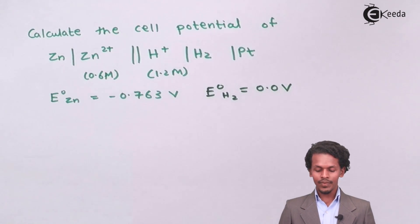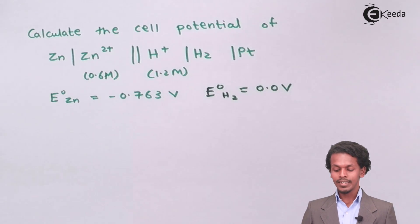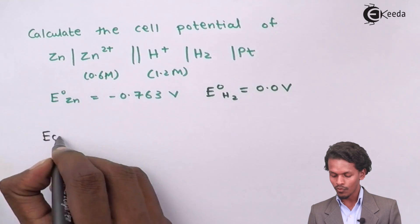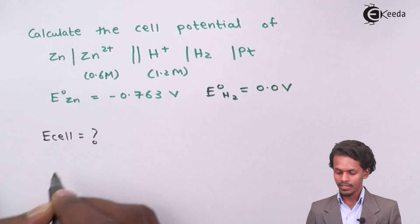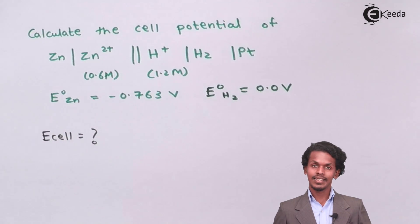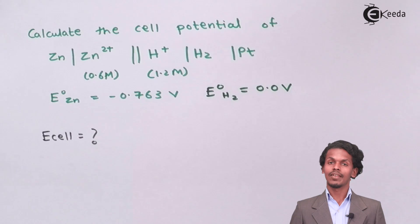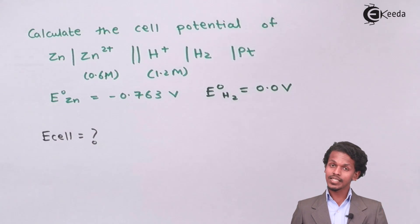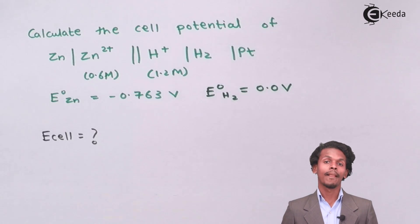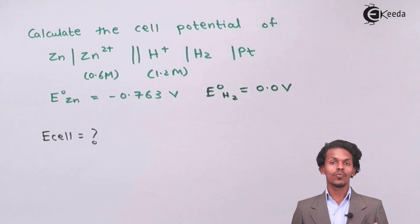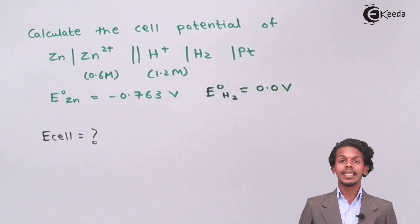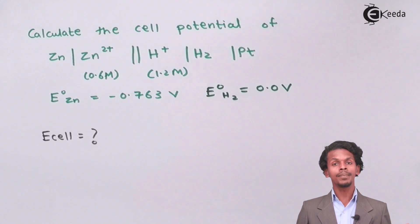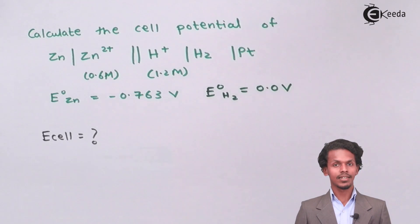So we have to calculate the cell potential, that is E_cell. First, let us write the cell reaction and see what the products and reactants are and how many moles of electrons are involved in the half-cell reaction.